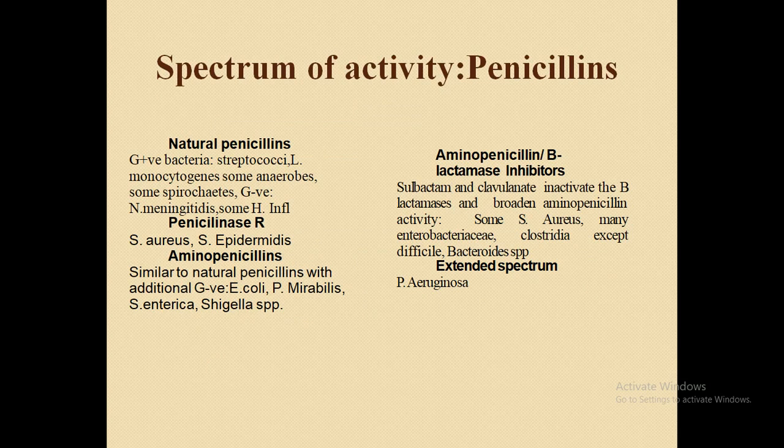Now, the spectrum of activity of penicillin. Penicillin is the first beta-lactamase cell wall synthesis inhibitor. Natural penicillins are antibiotics that are active against gram-positive bacteria like streptococci, Listeria monocytogenes, some anaerobes, and some spirochetes. Some are also active against gram-negative organisms causing pneumococcal meningitis and Haemophilus influenzae. Aminopenicillins are similar to the natural penicillins but with additional gram-negative activity.